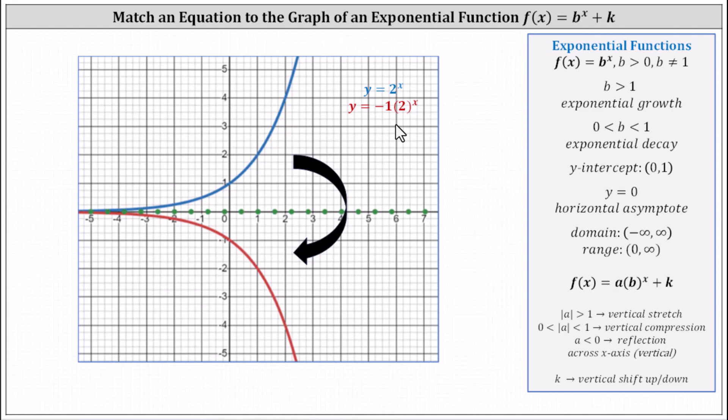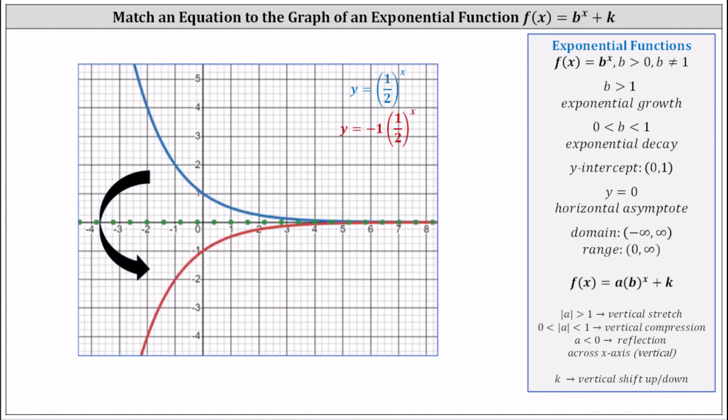Notice after the reflection, the new function is decreasing. Now let's look at the reflection of an exponential decay function. In blue, we have the graph of y equals one half to the power of x, which is decreasing. If we graph y equals negative one times one half to the power of x, the graph is reflected across the x-axis, giving us the red graph — notice the graph is now increasing.